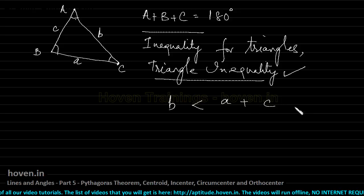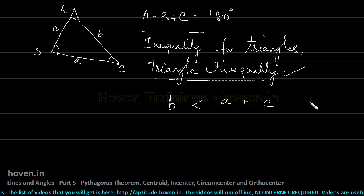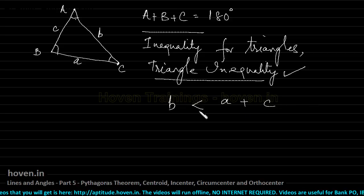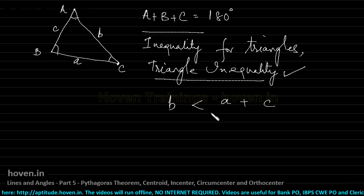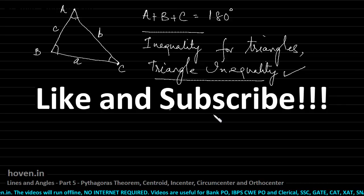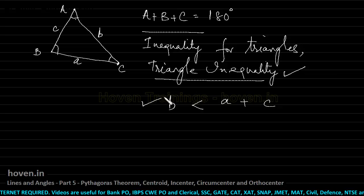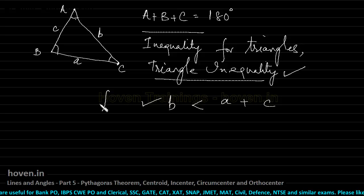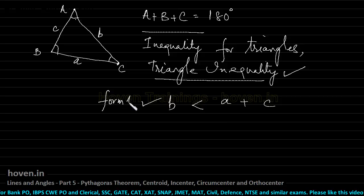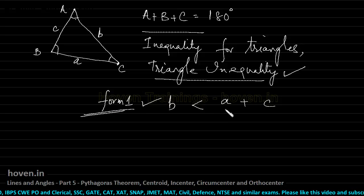There are questions in previous year papers where the triangle inequality was used to determine something about a triangle. For example, he will give you four or five lengths and ask how many triangles can be formed. You have to apply the triangle inequality to determine that. We will take those questions separately, but let us first list the theoretical properties. This is called form 1 of the triangle inequality.